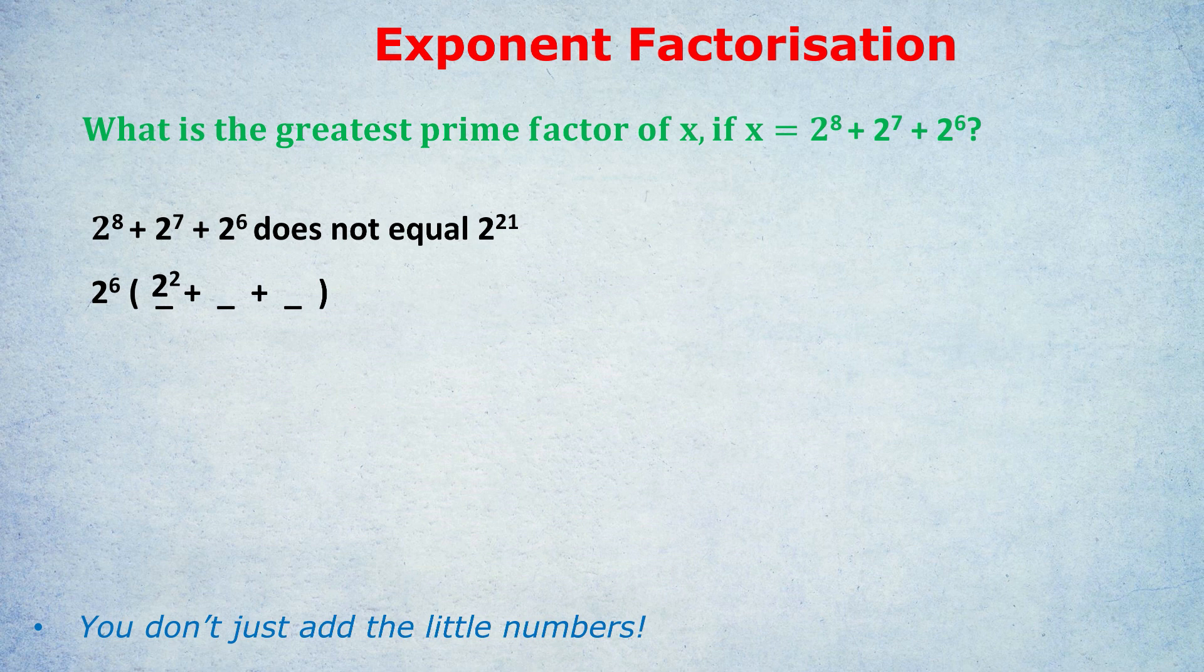The other one should be a bit more obvious now. 2 to the 6 times 2 to the 1 gets us back to the original 2 to the 7. The last one's more interesting. It would be 2 to the 6 times 1. That first step of factoring out is by far the hardest step. And that's the step most students forget.